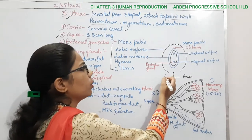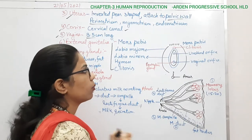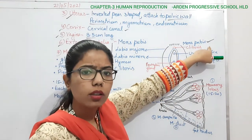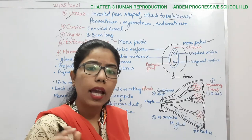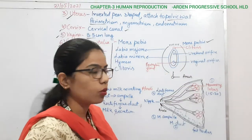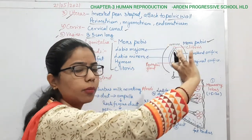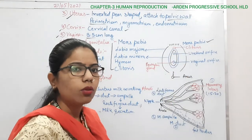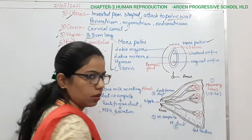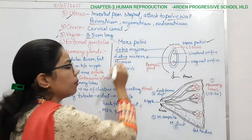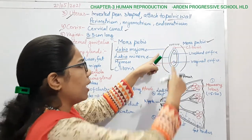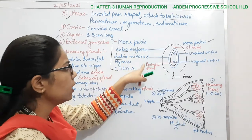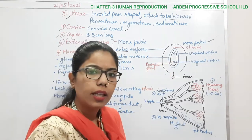The mons pubis is the hair and fatty layer present in the outer part. If you look internally, two lip-like structures are present — 'labia' means lip-like structure. The outer one is the labia majora and the inner one is the labia minora.